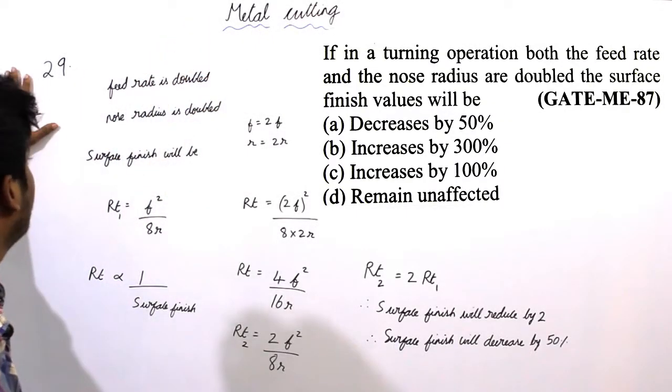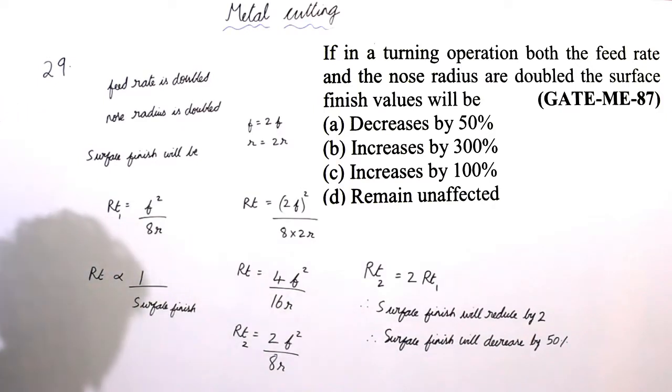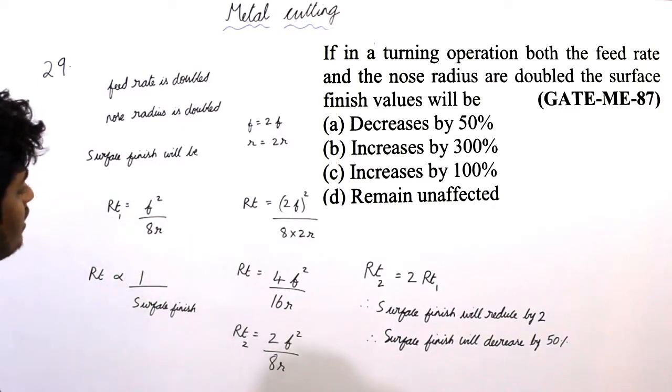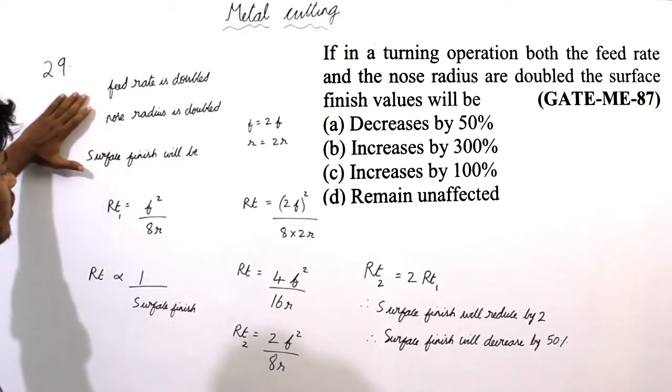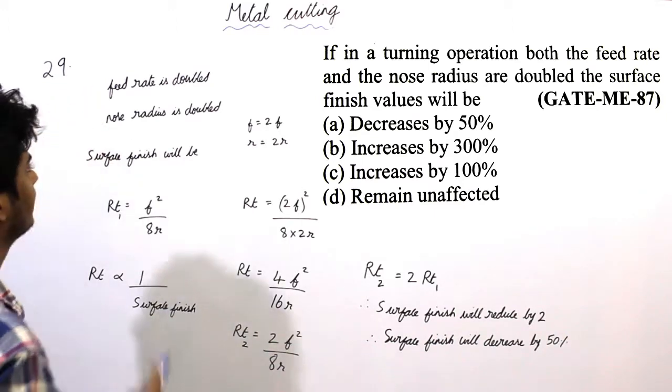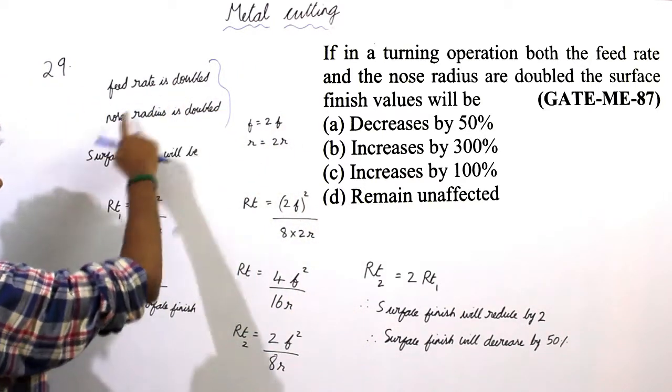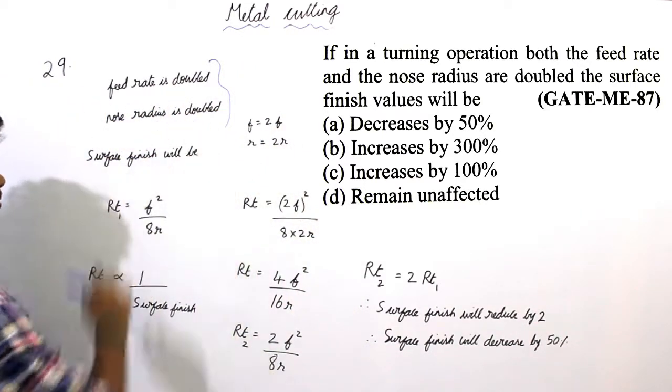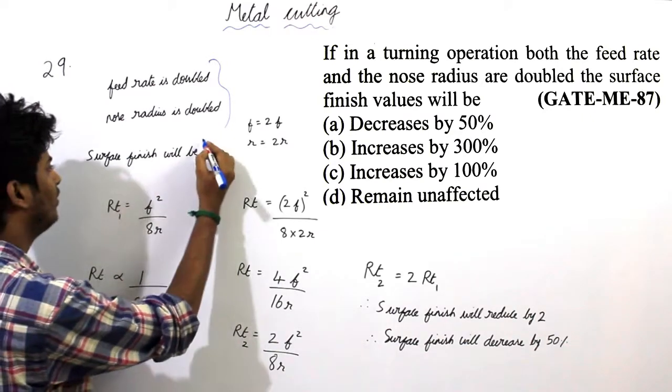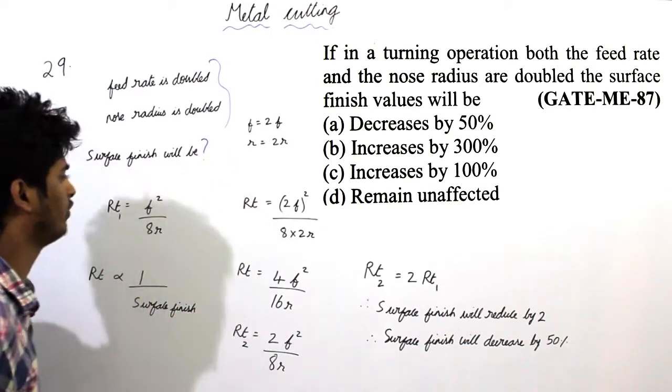Under metal cutting, problem 29 asks us to find whether the surface finish will increase or decrease if the feed rate and nose radius are doubled. These are given data: feed rate is doubled and nose radius is also doubled. They have asked about surface finish.